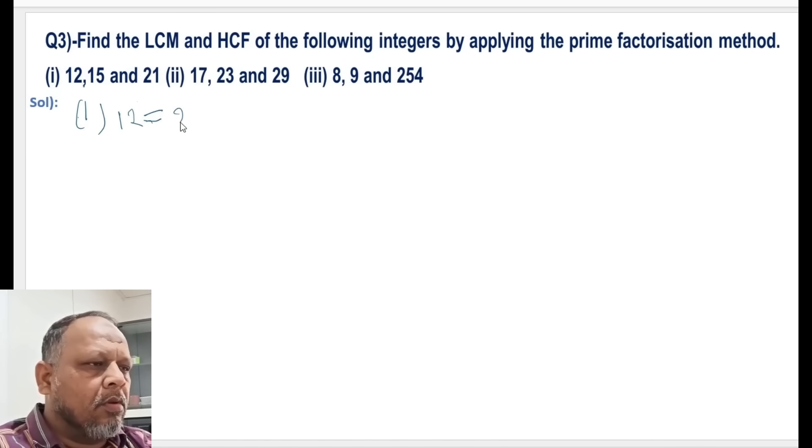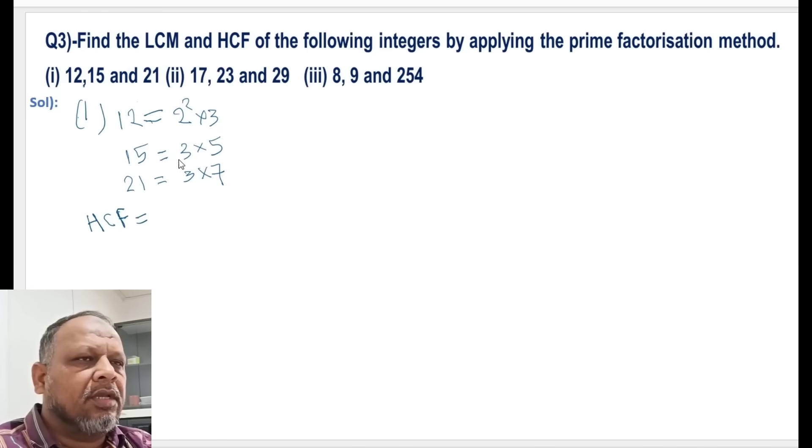Third question: 12 is 2 square into 3, 15 is 3 multiplied by 5, and 21 is 3 multiplied by 7. For HCF we see that 3 is the common prime and its lowest power is 1, so 3 is the HCF.